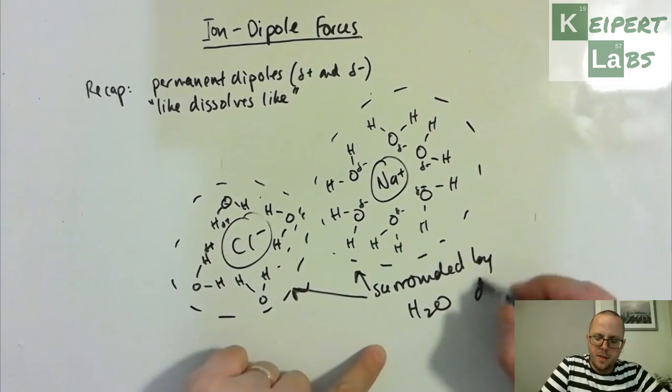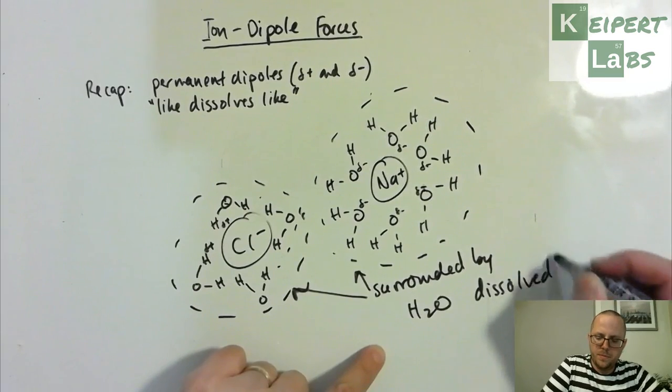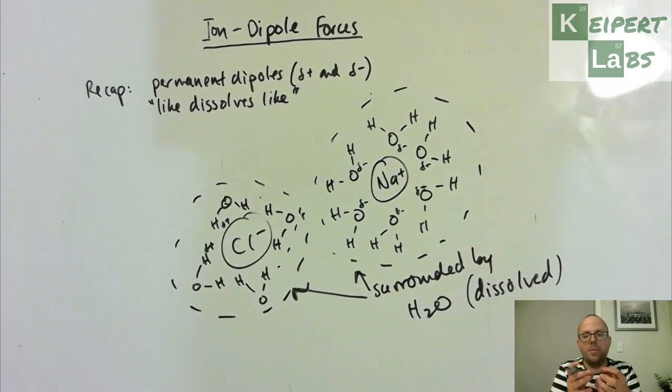So it has dissolved, that those ions have become separate from one another, that the lattice has broken apart. Each of those ions has become surrounded by water molecules due to their attraction between the water and the ion itself.